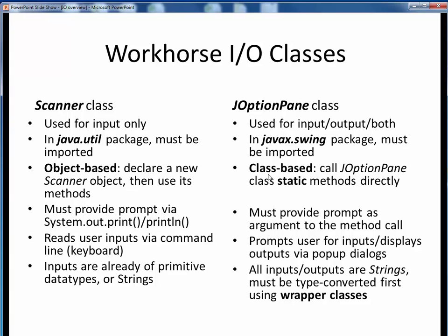By contrast, JOptionPane contains static methods, which means we call those methods coupled with the name of the class itself. Both classes require us to provide text prompts to the user. For Scanner, the prompt is printed using System.out.print or println preceding the data read. For JOptionPane, the prompt is provided as an input argument to the static method call. Scanner reads user input only from the command line via the keyboard, whereas JOptionPane can read inputs or display outputs via pop-up GUI dialog elements. When we read in user input data with Scanner, the data is already of some primitive data type or a string. With JOptionPane, all inputs and outputs are of string type, so we typically must type convert them using the wrapper classes, which we discussed in a prior lecture.